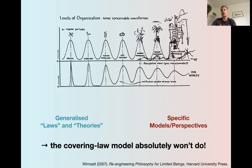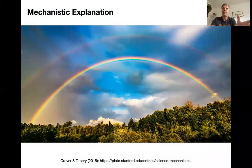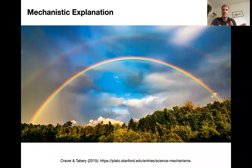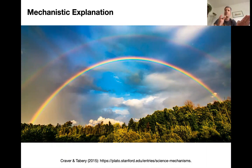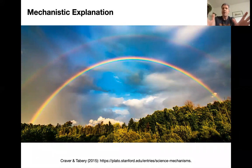As logical empiricism started to decline, people came up with new ways of looking at scientific explanation. One way is to say biologists don't have any explanations — the ultra-reductionist philosopher of science Alex Rosenberg has an article saying exactly that: biologists don't really explain anything because they're not physicists. Rosenberg takes the wrong premise, follows a strictly logical argument, and comes to the wrong conclusion. So if we don't accept that radical conclusion, how do we go about explaining stuff in biology? Let's take the rainbow again.